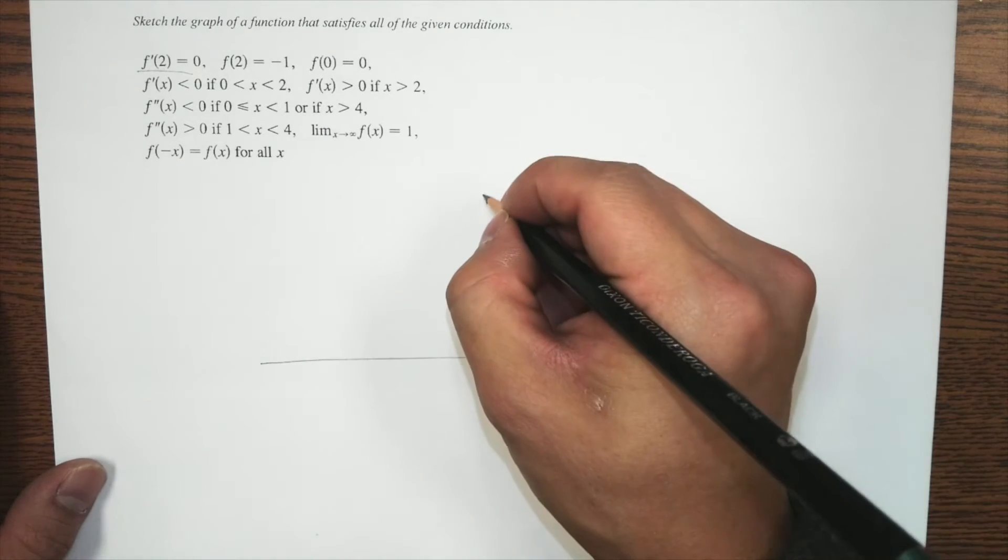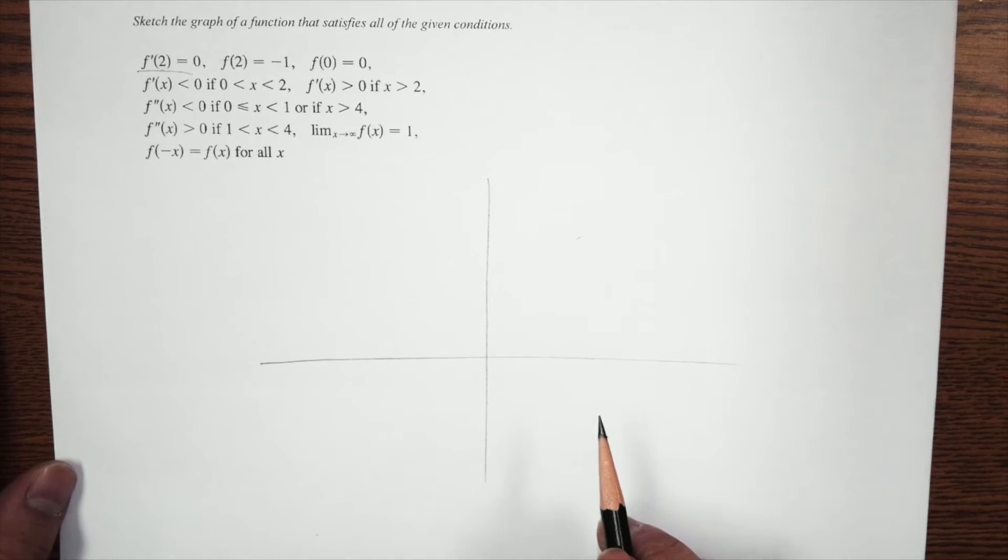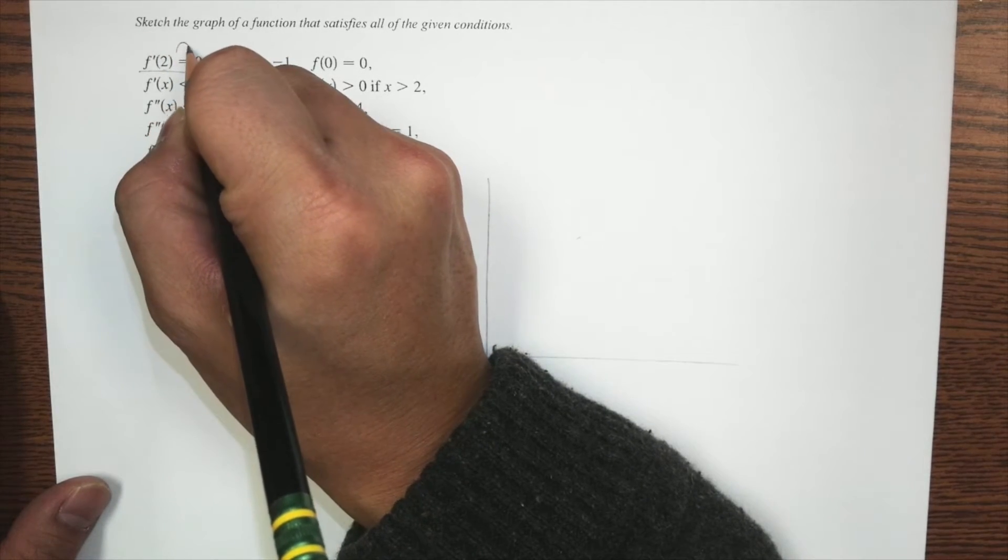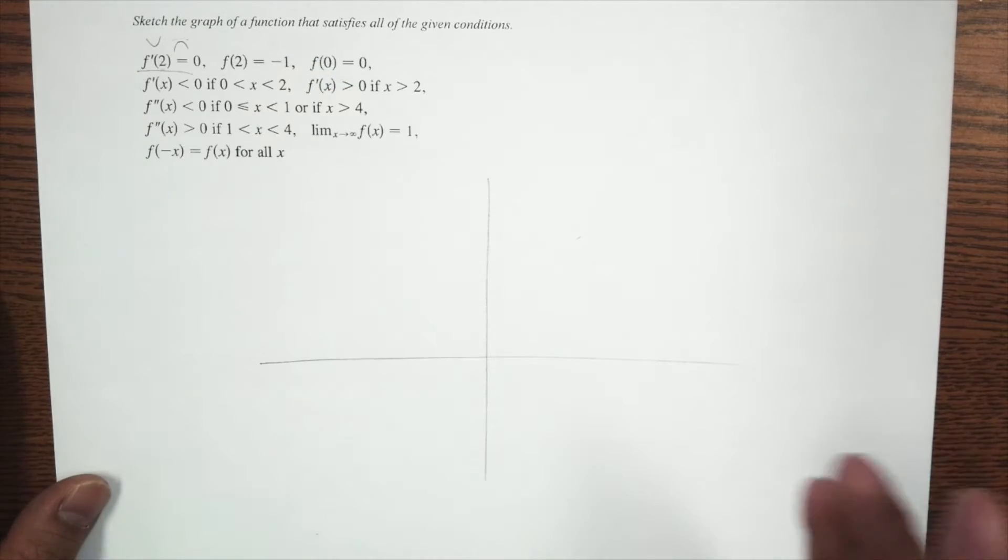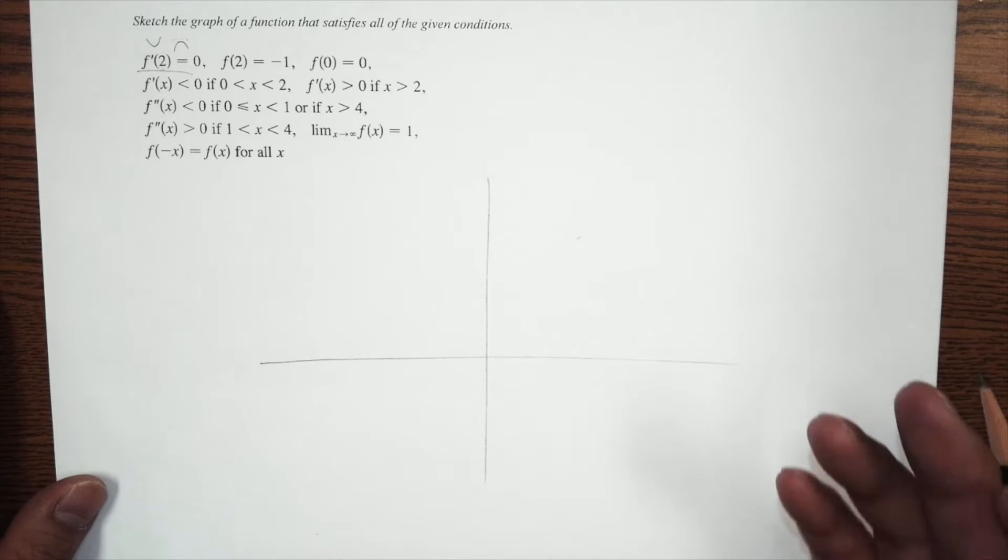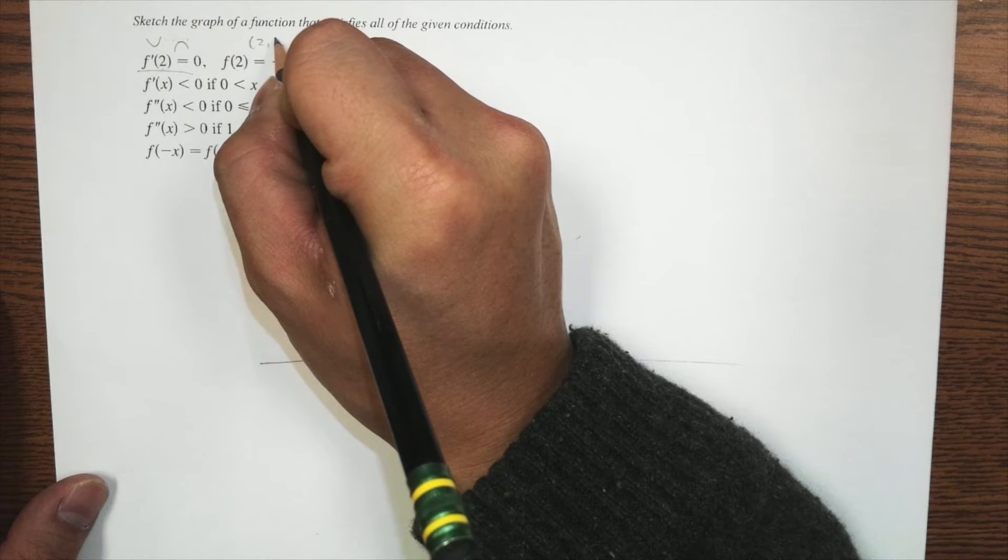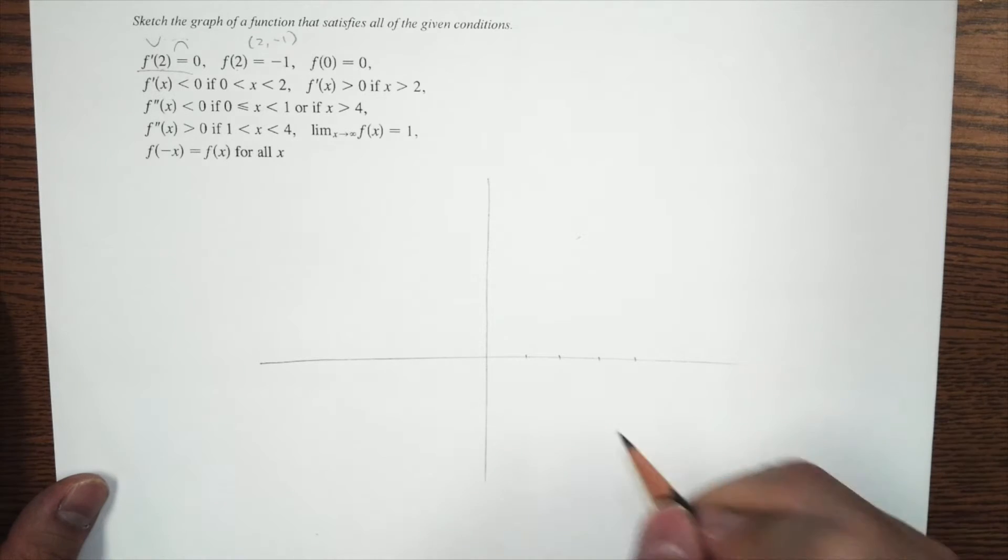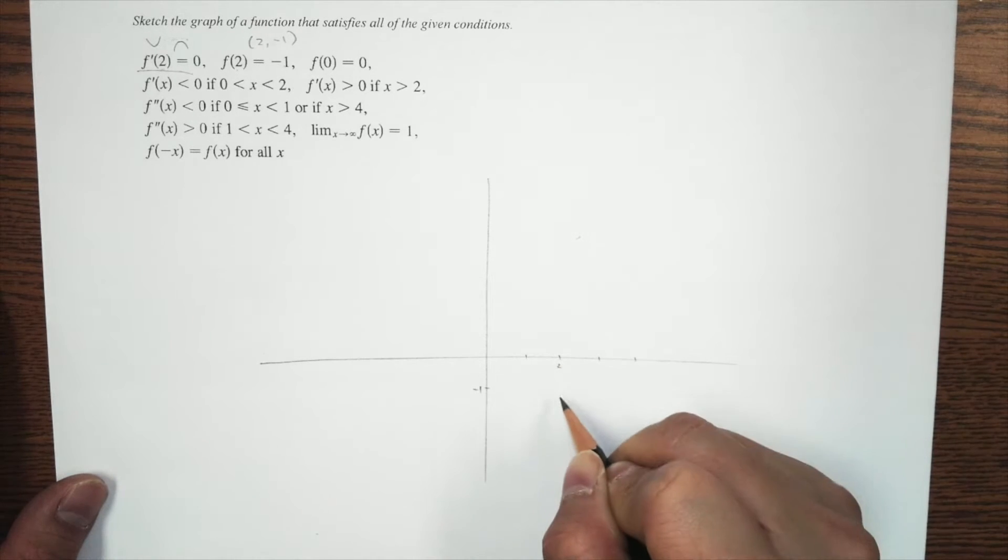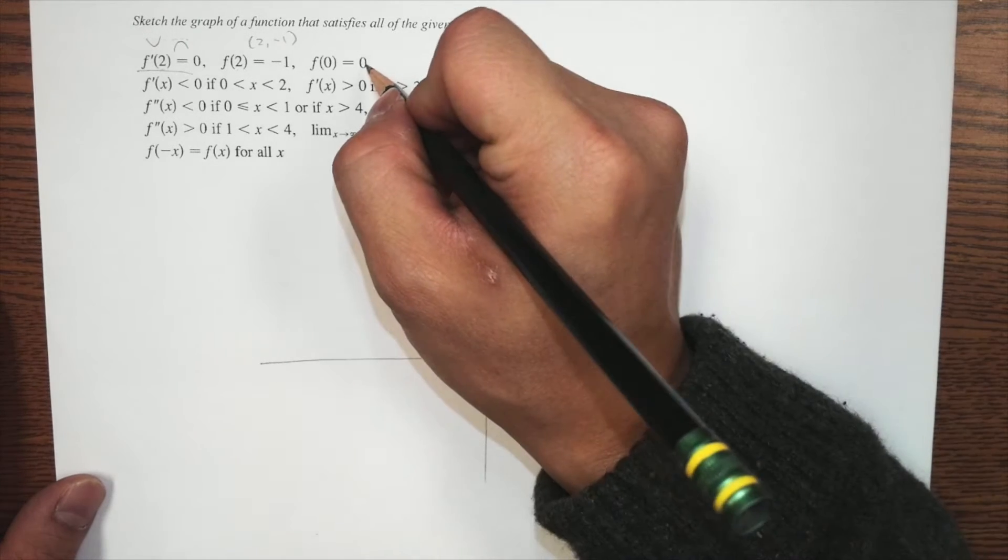So let's go ahead and draw a graph like this. And right here, it says f prime of 2 is equal to 0. So it would give you an idea that we have a horizontal tangent line right here. Now it could be a maximum, it could be a minimum, we don't know yet, but we will find out as we move on. And it tells you that it's going to be negative 1 when the x value is 2. So if I go ahead and do this graph, I can say, well, this is negative 1, this is 2, I know a point already. It's right here.